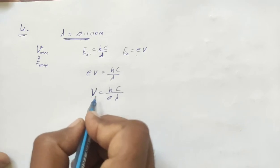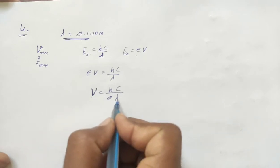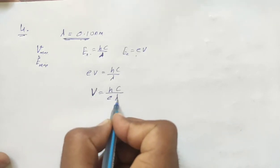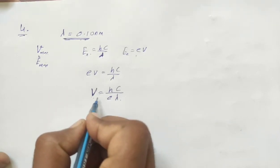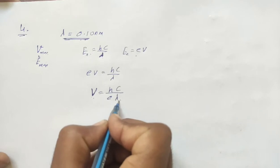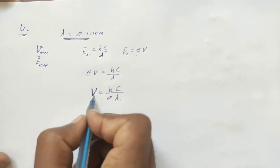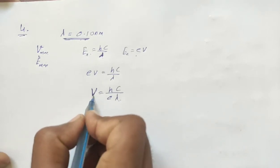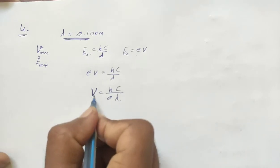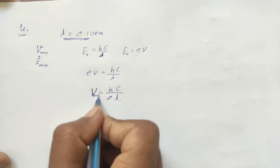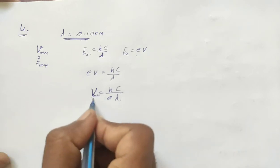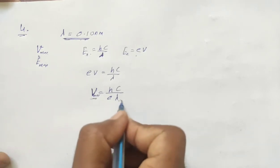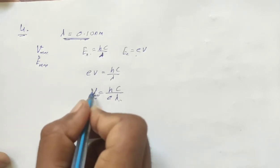How is the potential maximum? Because the wavelength is at its minimum value of 0.10 nanometer. If we reduce the wavelength further, the potential increases. So when wavelength is minimum, the potential is maximum.